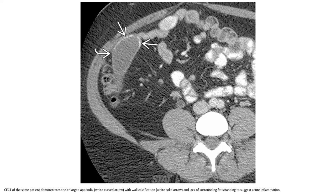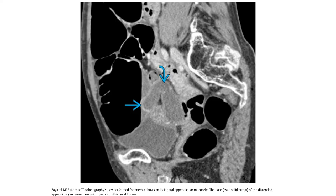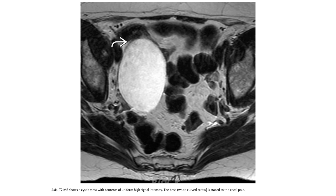In another case, a CT colonography study performed for evaluation of the appendix shows the mucocele. The mucosa at the base of the cecum projects into the cecal lumen. The appendiceal mucocele appears as a well-defined mass with uniform signal intensity at the base, consistent with an appendiceal mucocele.